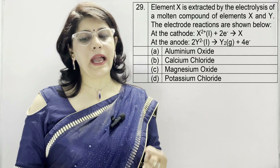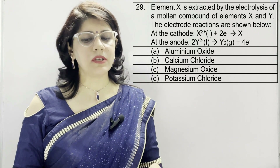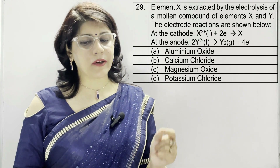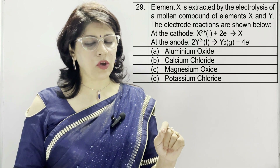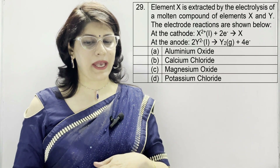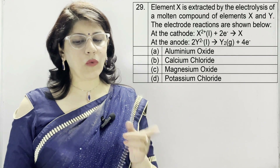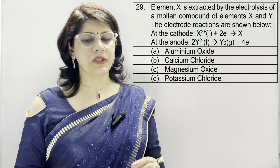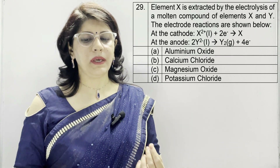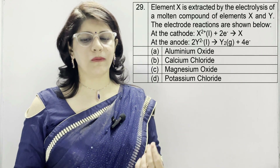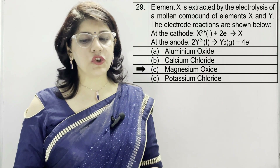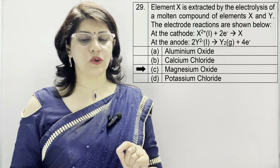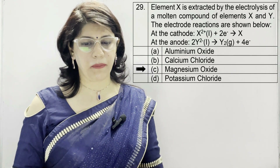In the next question: element X is extracted by the electrolysis of a molten compound of elements X and Y. At the cathode: X(2+) + 2e- → X. At the anode: 2Y(2-) → Y2 + 4e-. Options: aluminium oxide, calcium chloride, magnesium oxide, potassium chloride. The correct option is magnesium oxide because 2+ valency corresponds to Mg(2+).